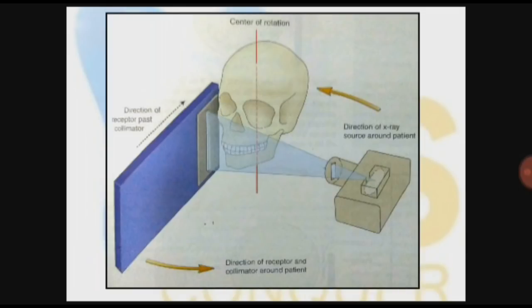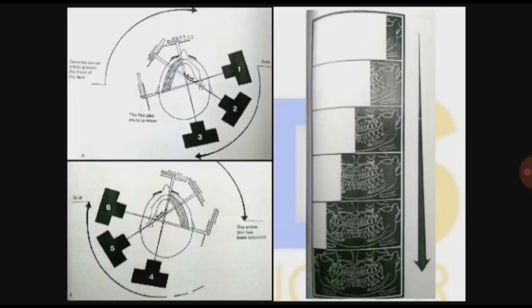Both of these things are moving. The tube head directs the x-ray source around the patient, and in the similar direction the receptor is also moving in the anti-clockwise direction.